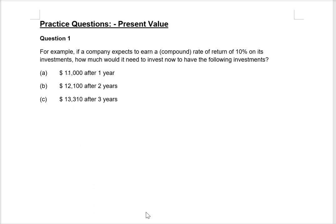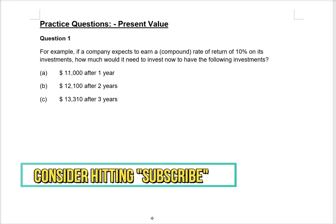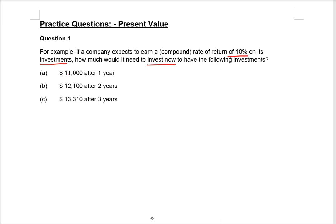Now let's go through the questions. First question: if a company expects to earn a compound rate of return of 10% on its investments, how much would it need to invest now to have the following amounts? Eleven thousand dollars after one year, twelve thousand one hundred after two years, thirteen thousand three hundred and ten after three years. So these are the things that you need to identify.